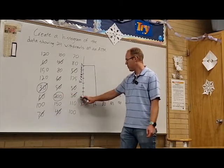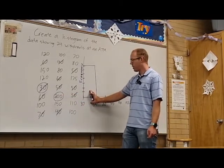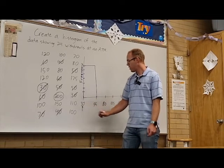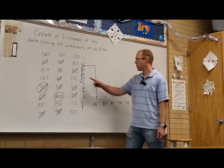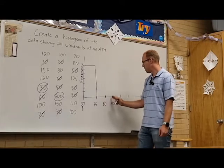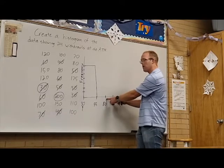30 was right on the border here and we put it in the bin above. Every time we have one that falls right on a border, we're going to choose to put it in the bin above. This 80 actually goes in the 80 to 105 category, in the bin above 80.